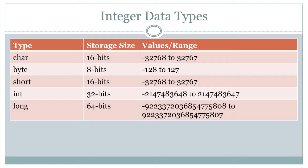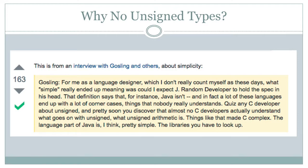Noticeably absent from this list are unsigned types - all these are signed types, so that is one limitation. I've been programming Java for a while and never really thought much about using unsigned types because I wasn't doing system programming. I just used a type big enough to hold the value I'm trying to store. I'll show you a quote I found when looking on the web for why Java doesn't have unsigned int.